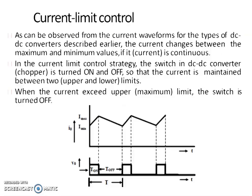The next strategy is Current Limit Control. In this strategy, the on and off of the chopper circuit is guided by preset values of load current — a maximum load current and a minimum load current. When load current reaches the upper limit I_max, the chopper is switched off and the load current freewheels and begins to decay exponentially. When the load current falls to the lower limit I_min, the chopper is switched on and the load current begins to rise. The switching frequency of the chopper can thus be controlled by setting I_max and I_min.